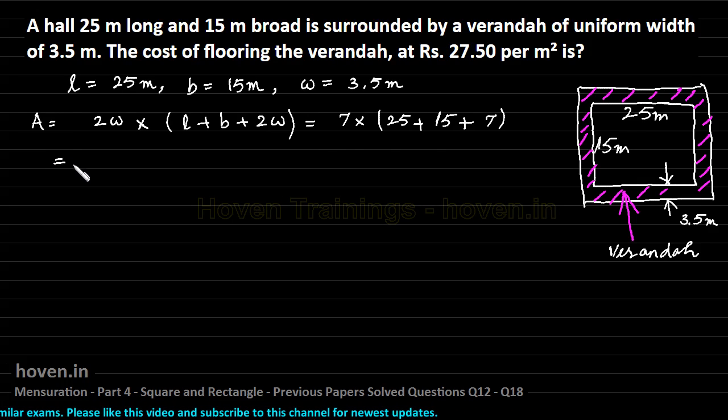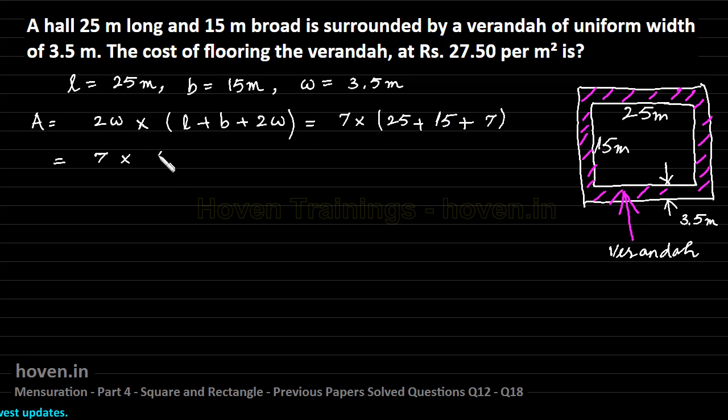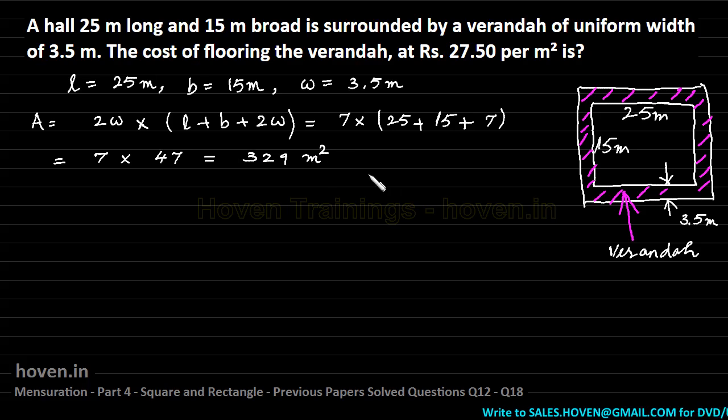Which we can write equal to 7 multiplied by 25 and 15 will be 25 plus 5, 30 and then 10, 40. This will be 40 plus 7.